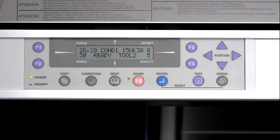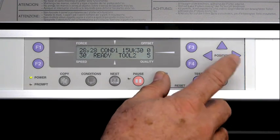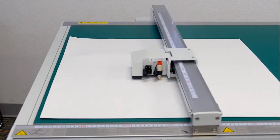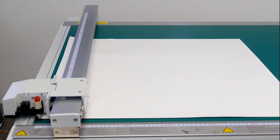There is a useful function that can be used when the toolhead ends up somewhere in the middle of the table and you need to move it back to the origin point. Simply hold down the enter and the down arrow keys at the same time. This will return the head back to the origin automatically.